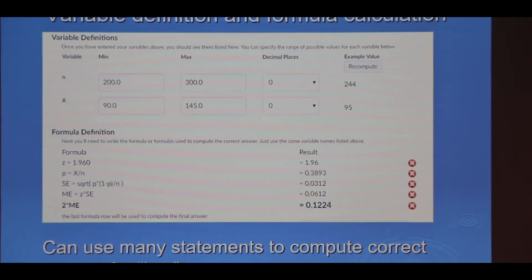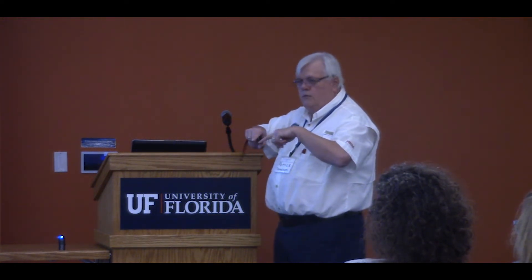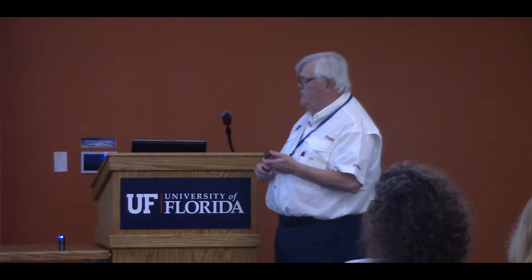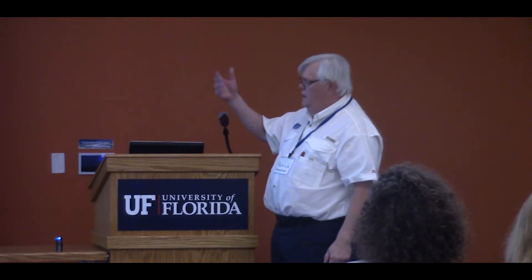The value of X, the number of people that agreed with that statement, is going to be somewhere between 90 and 145. The number that were in the survey is somewhere between 200 and 300. In this example, I got 244 for N and 95 for the X value on this particular version of the exam.